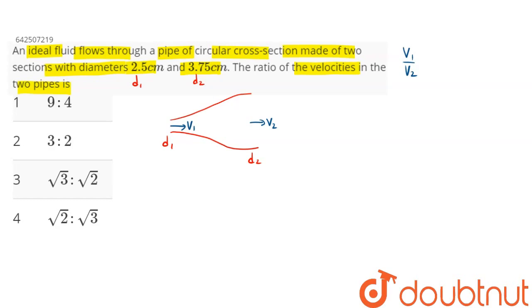By the equation of continuity, we can say that product of area into velocity at any junction must remain constant, that is A1V1 must be equal to A2V2.